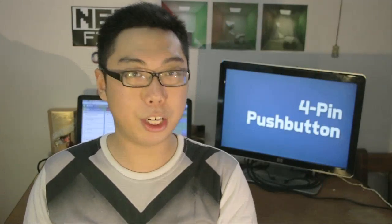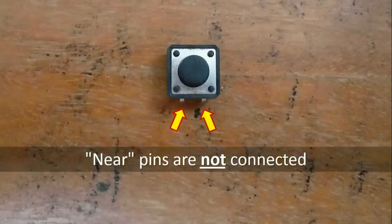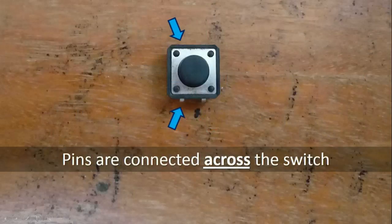To tell which two pins are shorted, you normally have to refer to the datasheet, though I have realized that most of these kind of switches I've seen, the two pins that are closer together are actually the two pins that are not connected. So they're connected across the long edge.